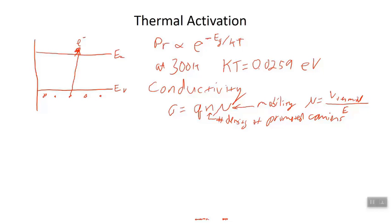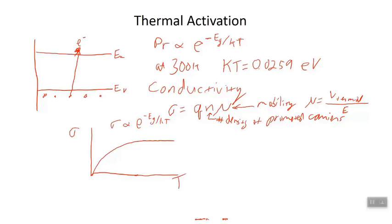If I were to sketch conductivity versus temperature: conductivity goes as N, and N goes as e to the minus gap energy over KT, so sigma is proportional to e to the minus gap energy over KT. At zero temperature there's no conductivity because you get e to the minus infinity. But at some very high temperature you're calculating e to the minus zero, which is one, so conductivity levels off at high temperature.